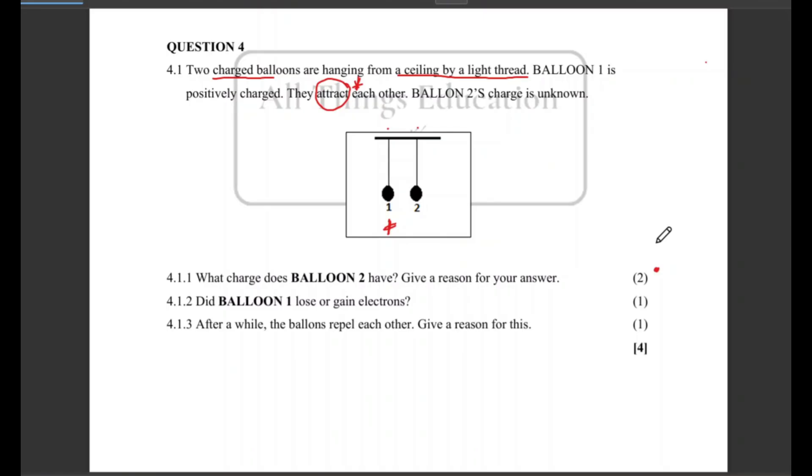Now already if we're having the information about balloon one being positively charged and that these two balloons attract each other, it is obviously giving us information that balloon two is definitely not a positively charged balloon. Because since they attract each other, that means there is an opposite charge. So it's either negative or neutral. So balloon two is either negative or neutral.